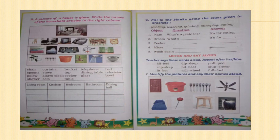When you look at the next page you can see some pictures of a house. In the box you can see some of the names of the articles. You should write those in the right column. The first column is living room, the second is kitchen, the third is bedroom, the fourth is bathroom, and the fifth is dining hall. For example, chair is usually kept in the living room, so you write chair in the first column.